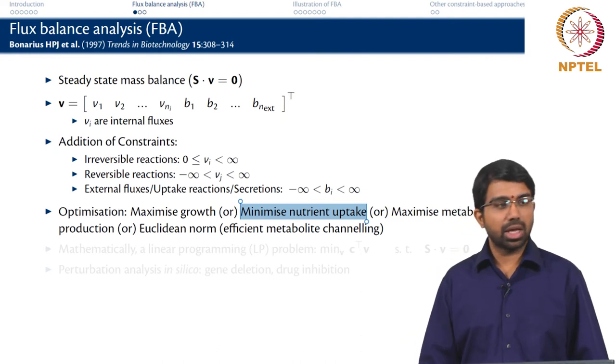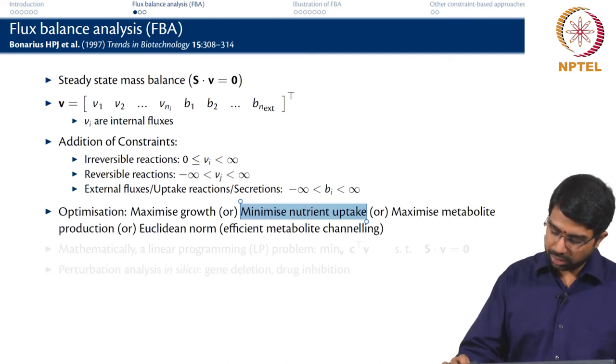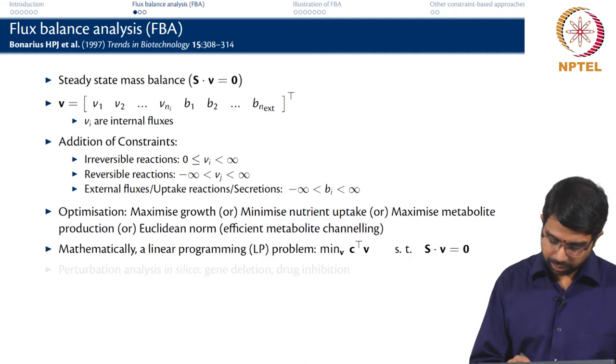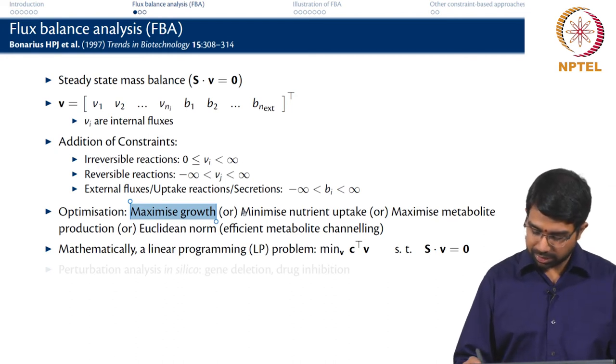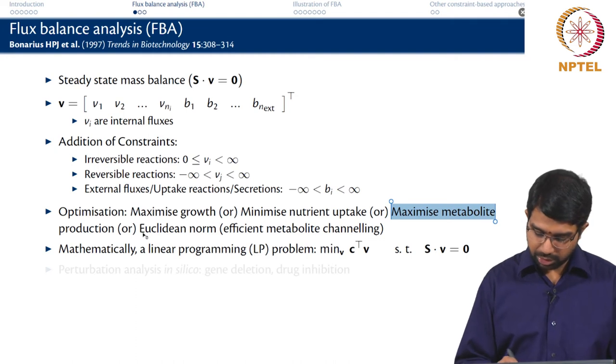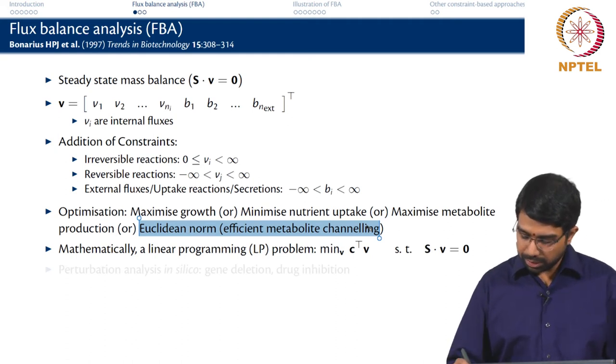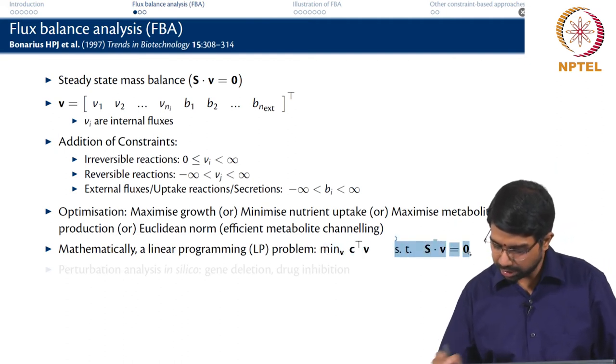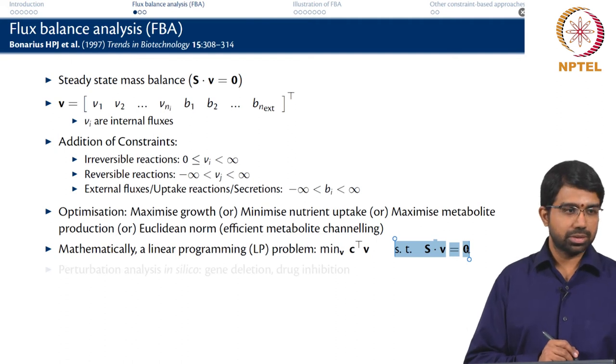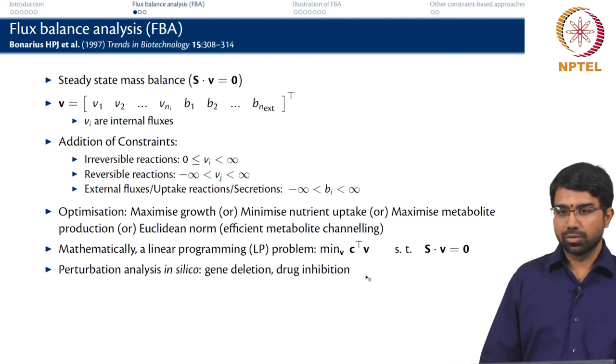Typically it is been found that if you try to maximize growth or minimize nutrient uptake, they are useful optimizations to carry out to find out what is the possible flux distribution. So it turns out that maximizing growth is a very useful objective function. You can have different objective functions like minimize nutrient uptake or maximize metabolite production or efficient metabolite channeling. We will look at these a little later but you basically minimize or maximize some linear combination of the fluxes subject to your stoichiometric mass balance constraints. And you can also do perturbation analysis, in silico gene deletion, drug inhibition, and so on.